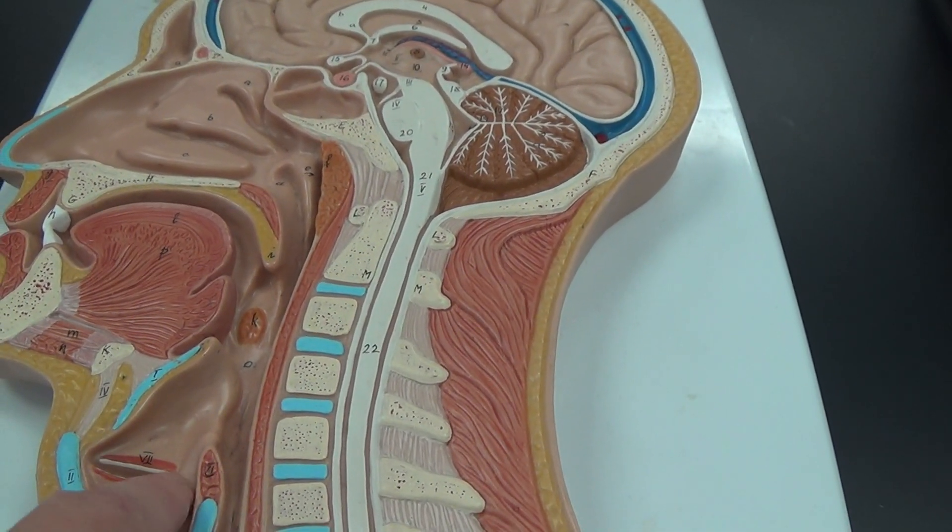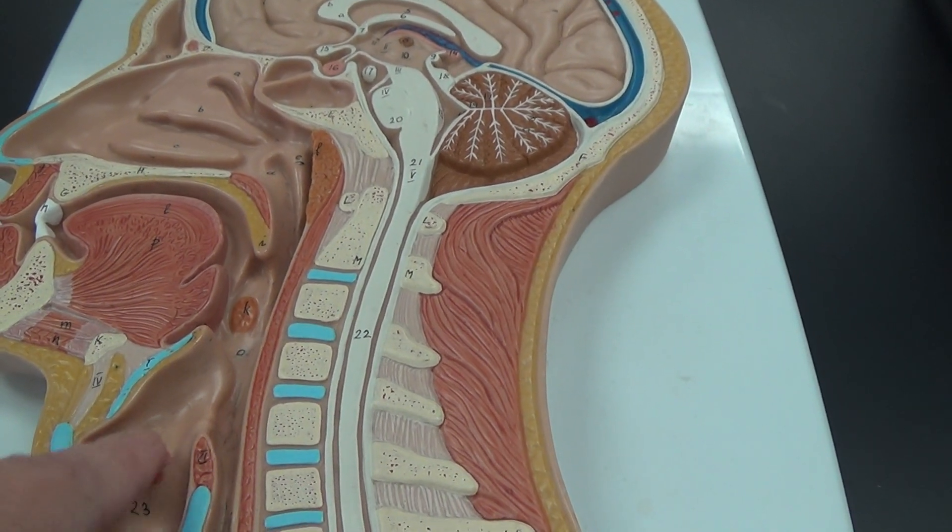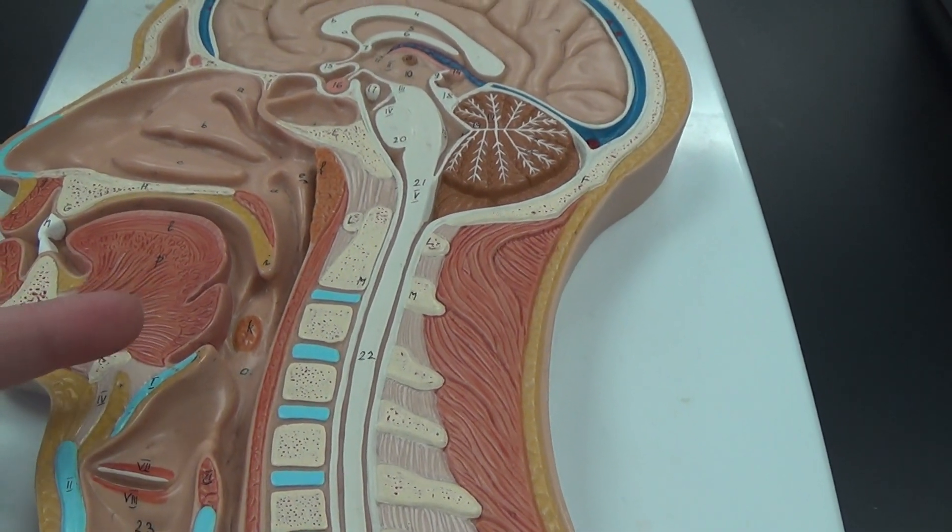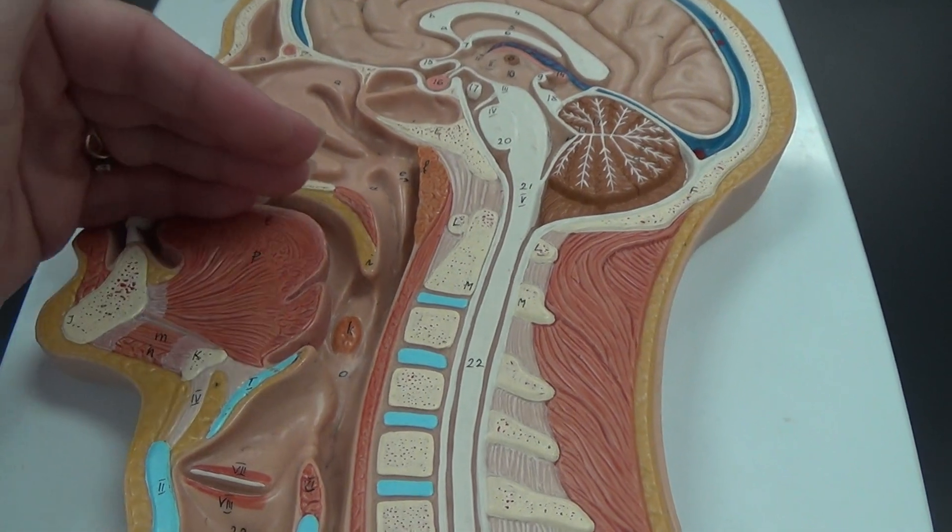This indentation with the red around it is the glottis with the vocal cords on either side. When you swallow food from the oral cavity,